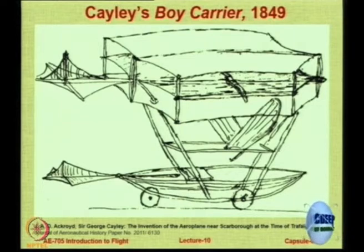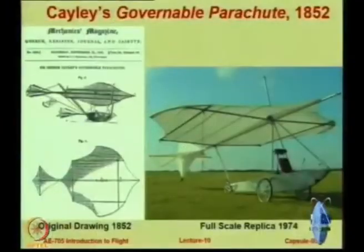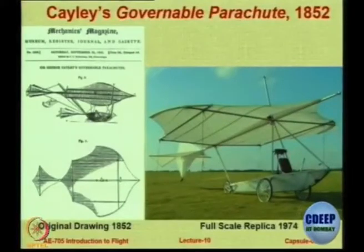There is a very interesting 50-page document on the history of the invention of the airplane and on Sir George Cayley. I am going to upload that on Moodle for self-learning, as it gives detailed information about what Sir George Cayley has done. But he knew that if he attained flight using children or small boys, people would not take it seriously. So he designed something called a 'governable parachute' — that is the name given by him.